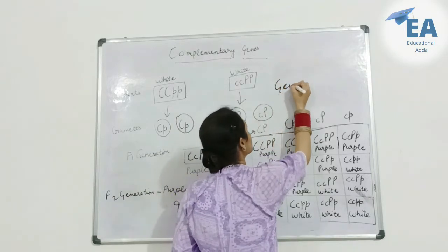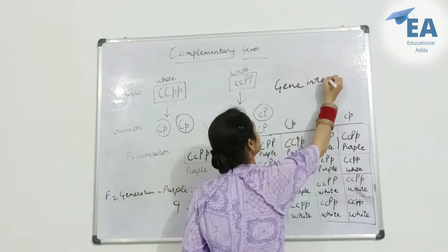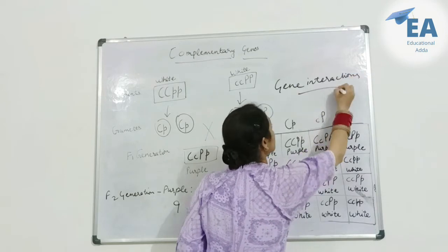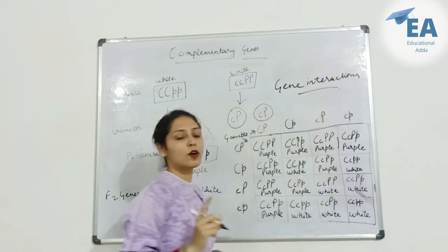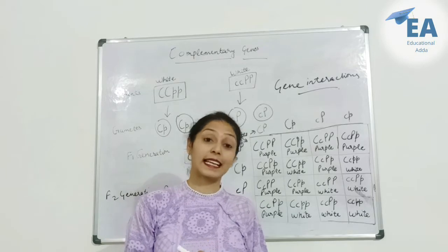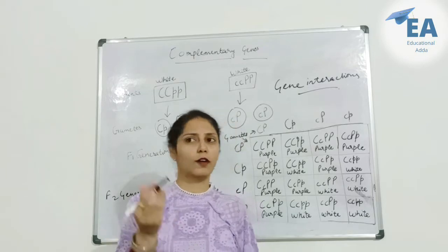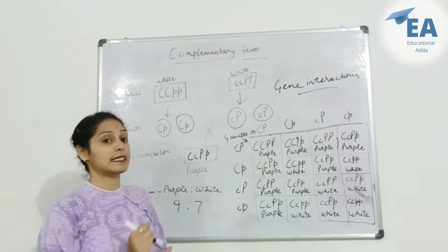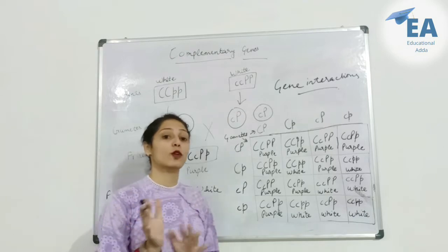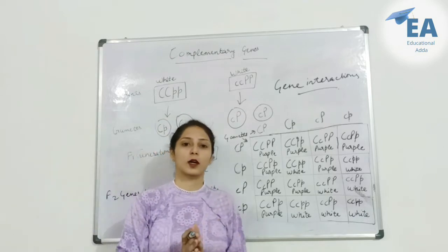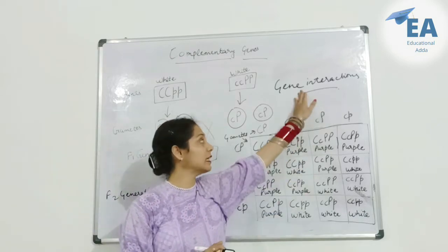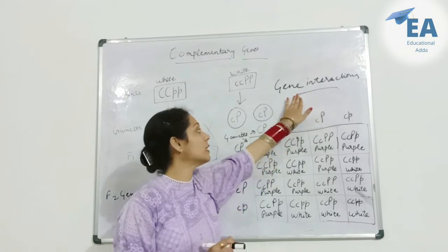What are gene interactions? The influence of one gene over another which causes a change in its expression and phenotype is called gene interaction. If one gene is affected by the other, we call it a gene interaction.